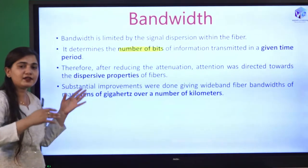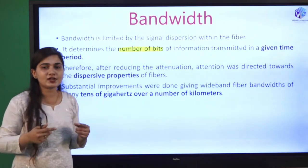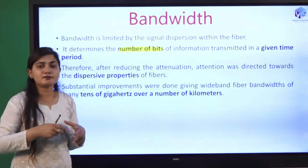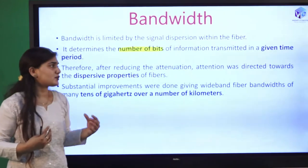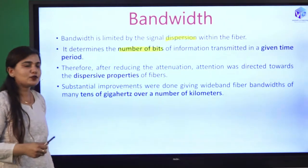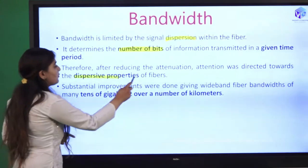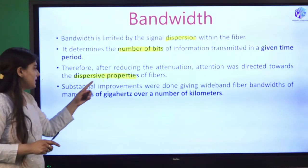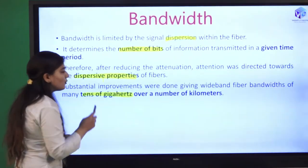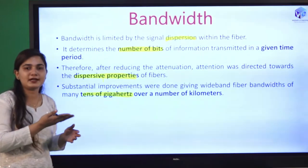Bandwidth determines the number of bits of information transmitted through the glass per unit time. In a given time, how many bits of information are transmitted? Bandwidth is a major criterion to determine the speed of information, and we all want higher speed devices. For that I require higher bandwidth, and for that I have to reduce the dispersion losses. After reducing attenuation, attention was directed towards the dispersive properties of the fiber, and substantial improvements gave wideband fiber bandwidth of many tens of gigahertz over a number of kilometers.